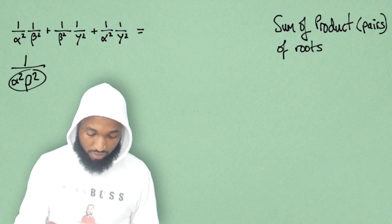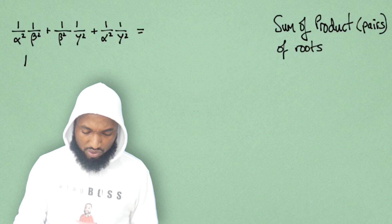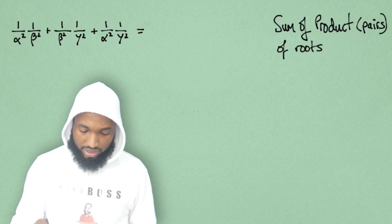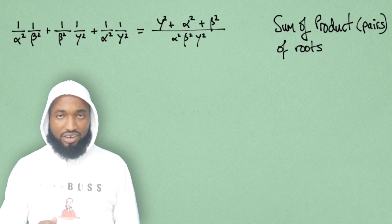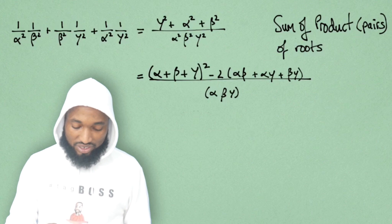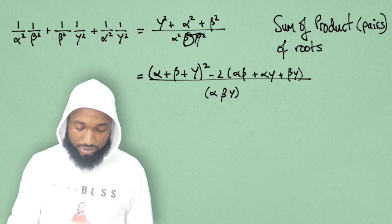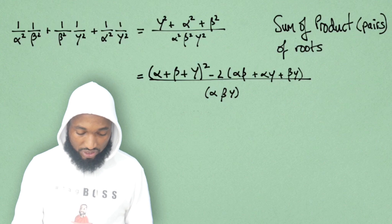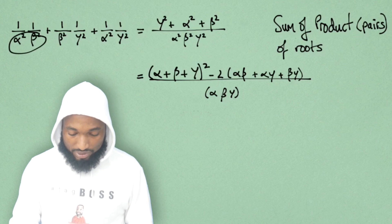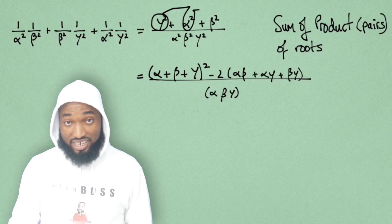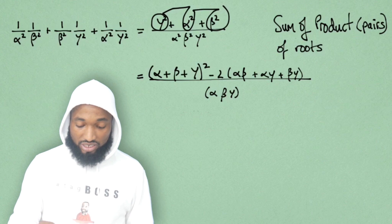We've seen this before. So we're going to bring all these fractions together under one denominator: alpha squared beta squared gamma squared. And now all that's left is to see how many times this goes into that and multiply it by 1, realizing the individuals on top.